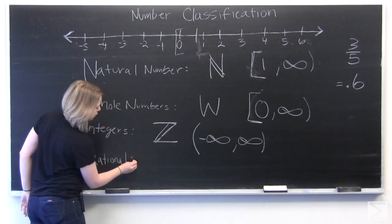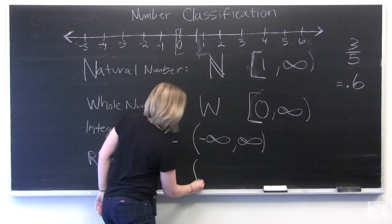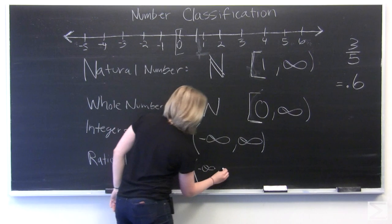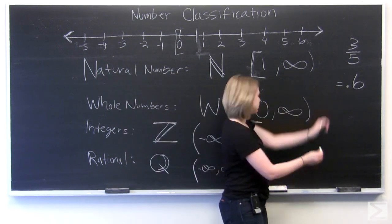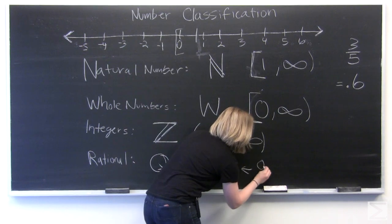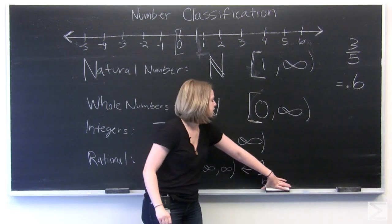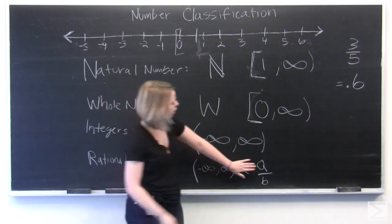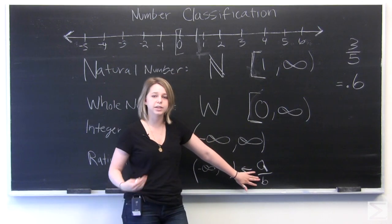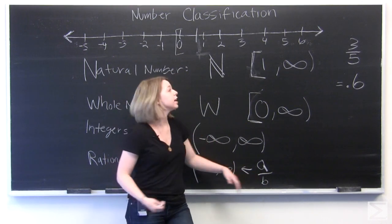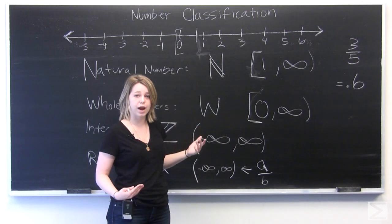And these can be represented with a Q. And these include all of our numbers from negative infinity to positive infinity that can be written as an integer over another integer. And just as a side note here, we've got our a over b. The b can be an integer such as positive one. And so that means that every integer on our number line is also a rational number.